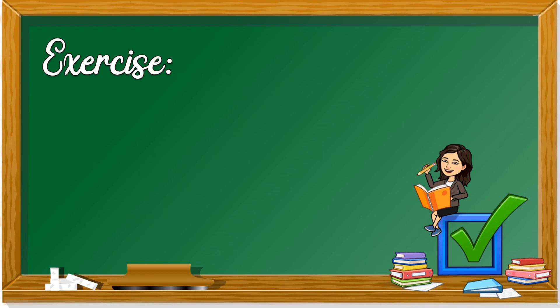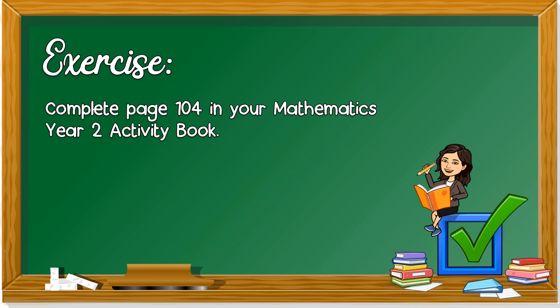I hope you understand what's the value of money. 100 ringgit can be represented in one 100 ringgit note, or two 50 ringgit notes, or 10 pieces of 10 ringgit notes. Exercise for today: complete page 104 in your Mathematics Year 2 activity book. Thank you class and I see you again on the next session. Goodbye! Take care. Bye!